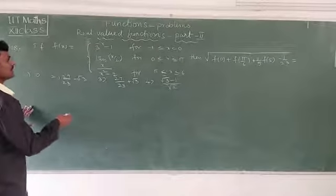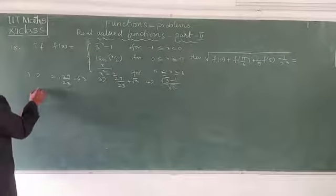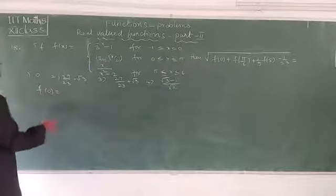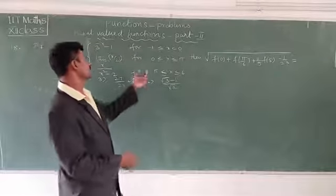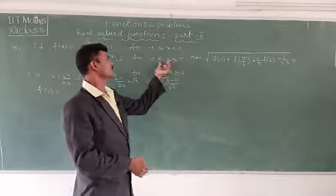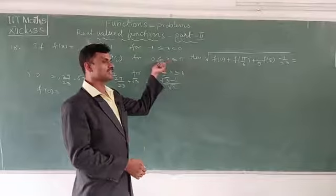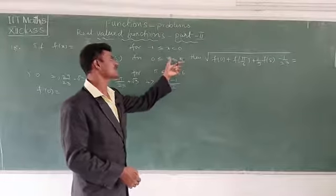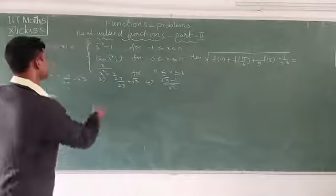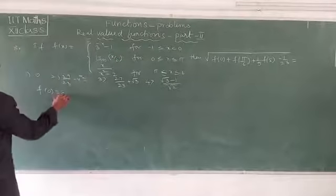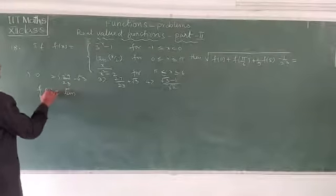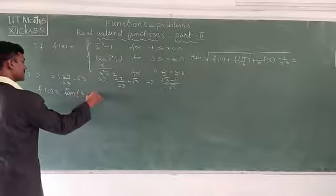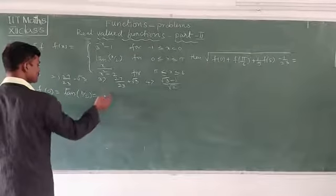First we have to find the value of f(0). Since x = 0 lies between 0 and π, we take tan(x/2). Substituting x = 0: tan(0/2) = tan(0) = 0. So f(0) = 0.